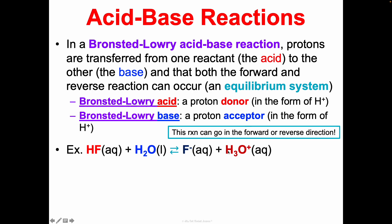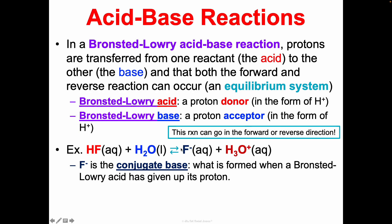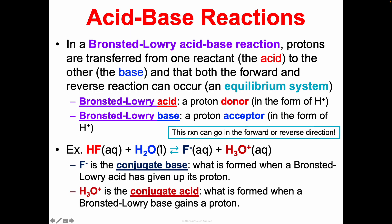Because this reaction can go both directions, F⁻ is qualified as a conjugate base — it is formed when a Brønsted-Lowry acid has given up its proton. When hydrofluoric acid gives up its H, F⁻ is what remains — that's its conjugate base. Similarly, H₃O⁺ is the conjugate acid — it is what's formed when the Brønsted-Lowry base, water, gains a proton.